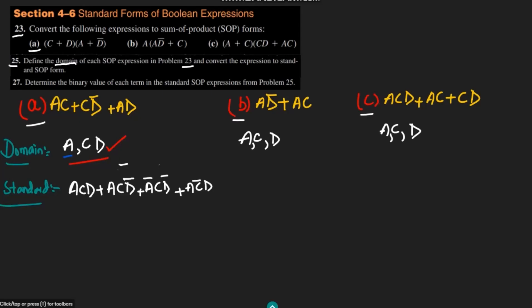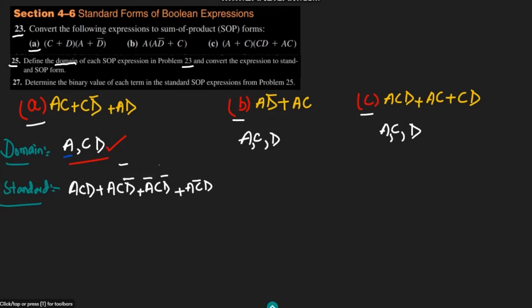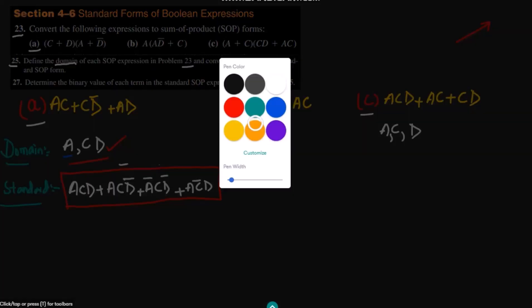Welcome back. This is question 25 and previously we started to find the standard form of Boolean expressions which are in the sum of product forms. Previously we solved part A of this question — I have put a link to that video. Today we are going to find the standard form of part B of the question.